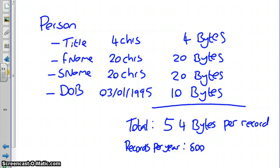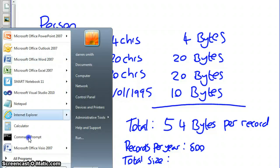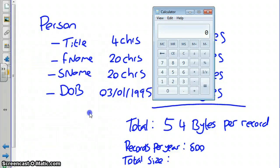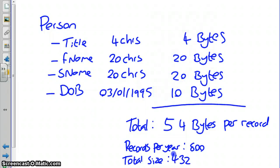then to work out the total size, or the total data requirements per year, we would do 800 times 54, which gives us 43,200 bytes.